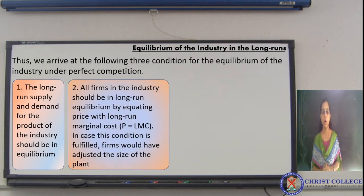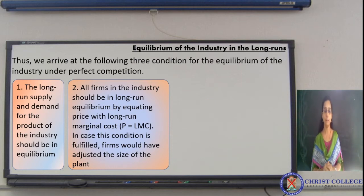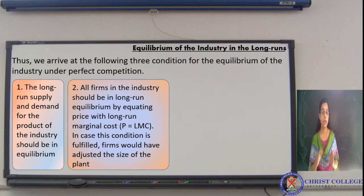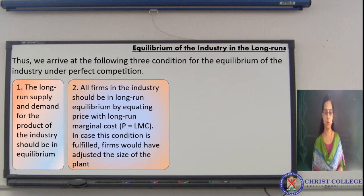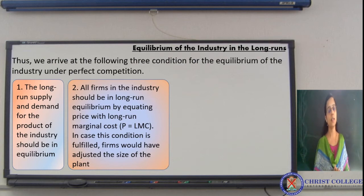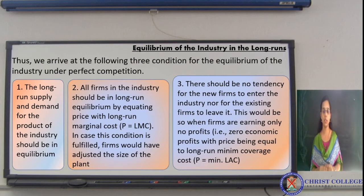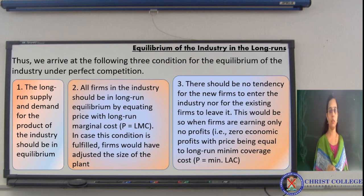The second condition says that all firms in the industry should be in long-run equilibrium by equating price with long-run marginal cost. The third condition is that there should be no tendency for entry of new firms as well as exit of already functioning firms — meaning zero economic profit, with firms earning only normal profit.